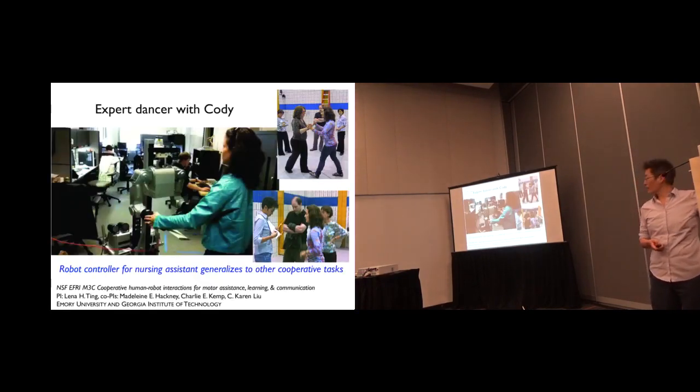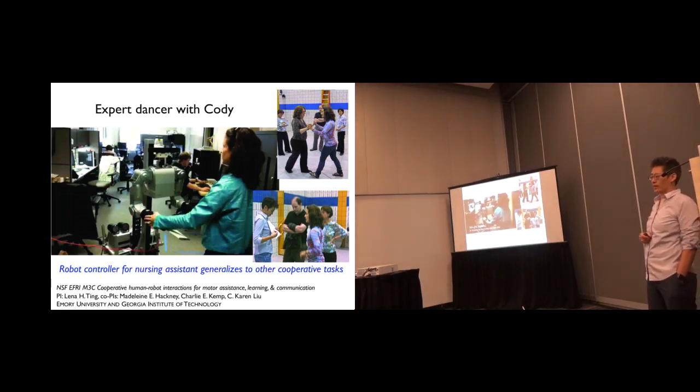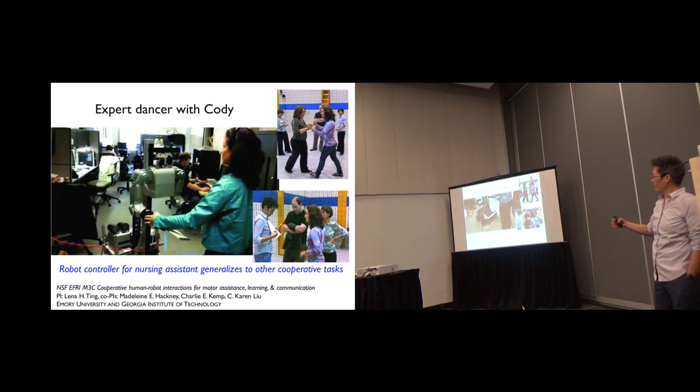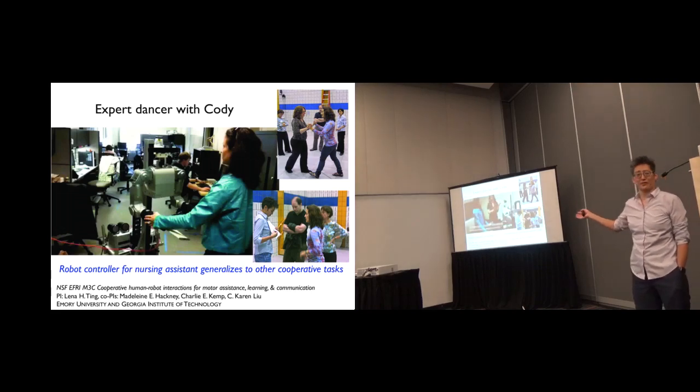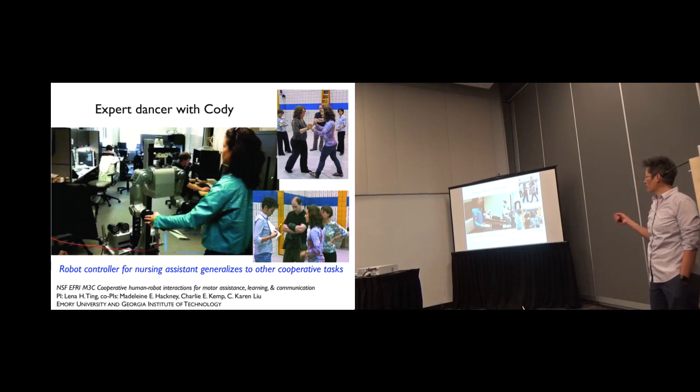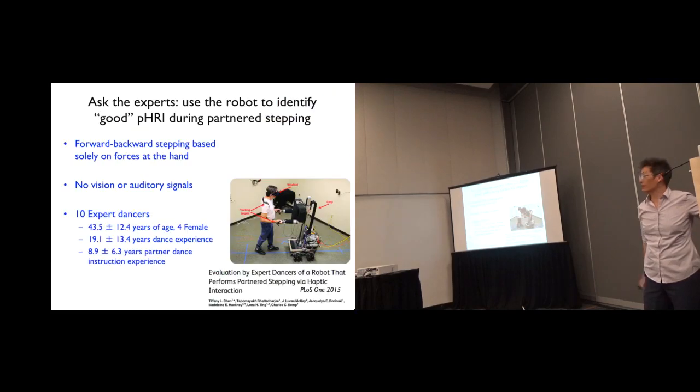So we were able to take the robot Cody, a mecha humanoid mobile manipulator. And it turns out that the sort of admittance controller and the compliance in the arms lent itself to the robot following Madeline, who's a professional dancer and a rehabilitationist. And we wanted to turn this into kind of a research project to say, what should the robot be like to be intuitive?